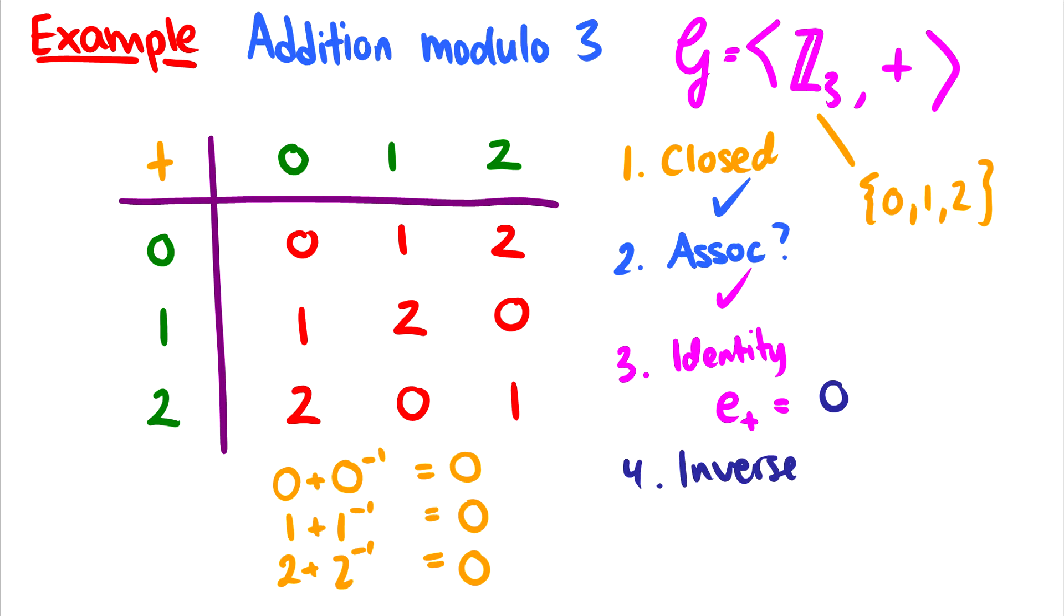So what are these inverses? Well, 0, what takes us back to 0? Well, it's just 0. 0+0 gives us 0. What about 1+1⁻¹? What, if we have 1, what takes us back to 0? Well, 2 takes us back to 0. So the inverse of 1 is going to be 2.